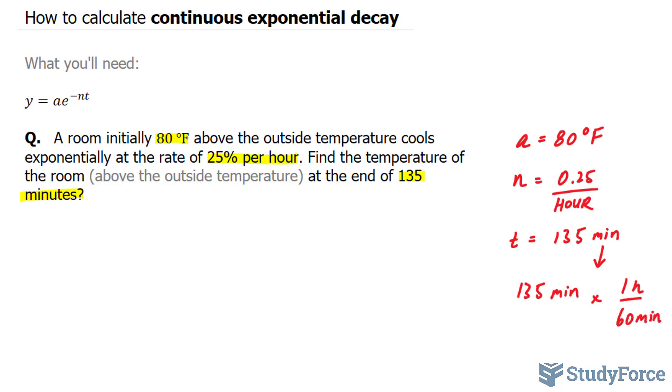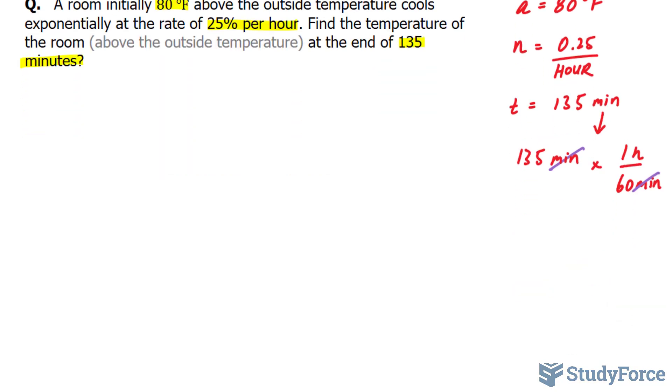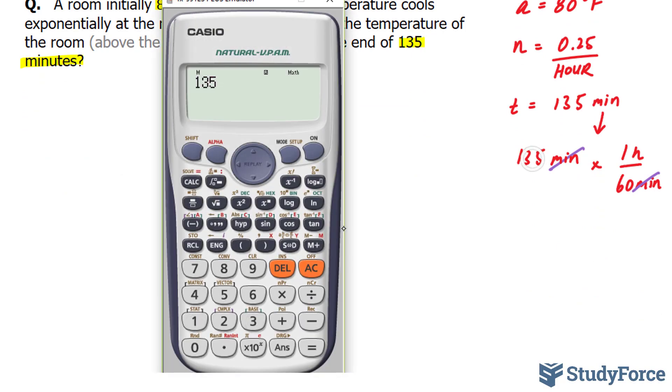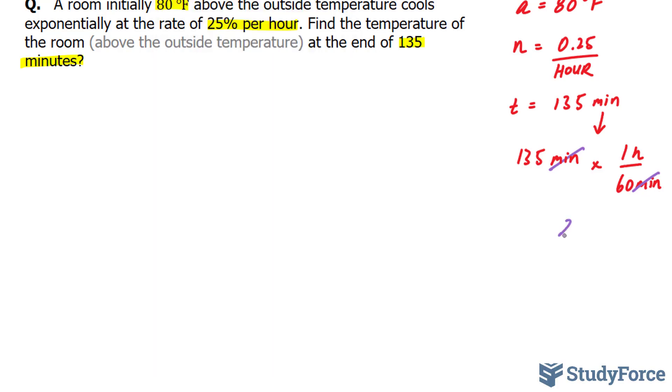And what this will do, if we multiply 135 by this conversion ratio, the minutes will cancel out, giving us precisely how many hours that is. Using our calculator, 135 times 1, which is 135, divided by 60, gives us 9 over 4, or exactly 2 and a quarter hours.